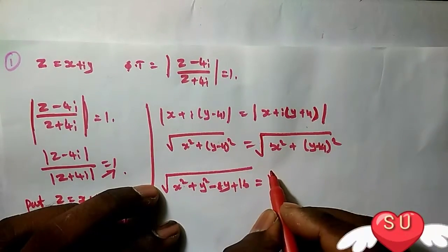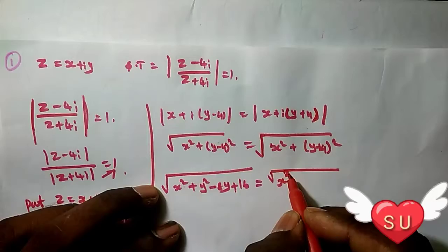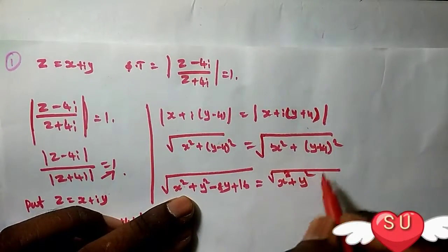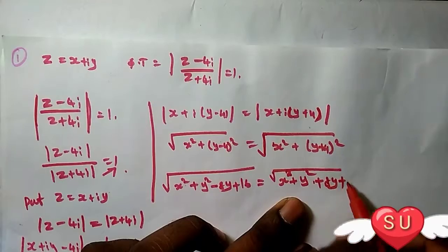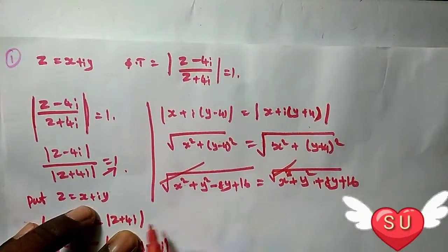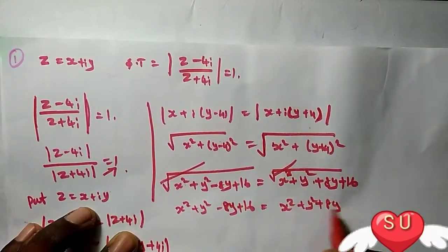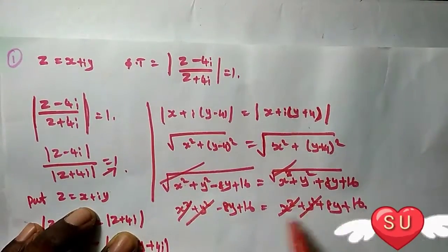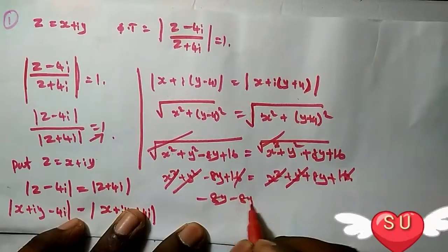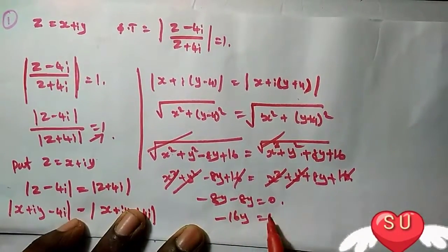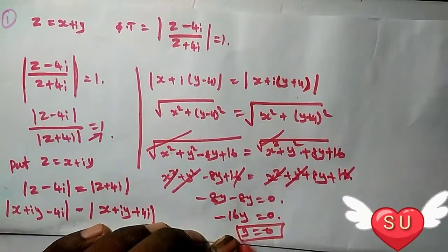...equals the square root of x squared plus y squared plus 8y plus 16. Squaring both sides, we get x squared plus y squared minus 8y plus 16 equals x squared plus y squared plus 8y plus 16. Canceling x squared, y squared, and 16, we get minus 8y equals 8y, so minus 16y equals zero.